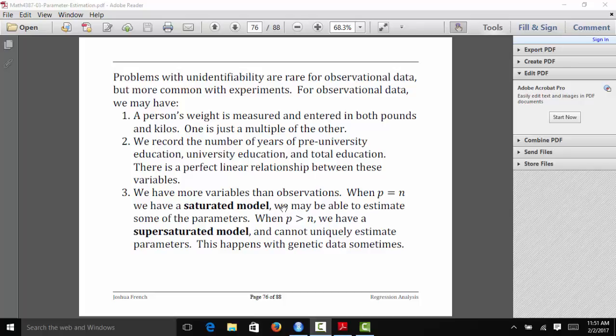For one person, you can measure thousands and thousands of genetic variations and things related to their genetic structure. So we have lots of measurements on each individual person, but you usually don't have that many observations. You don't have that many people you've made measurements on. So this is actually a real problem with genetic data.